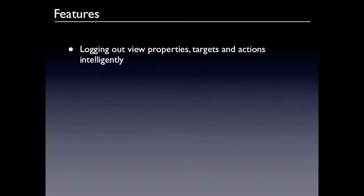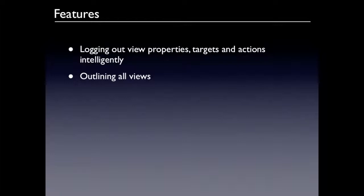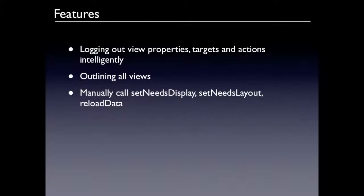It logs out all the properties — it'll look at each property, even ones you've written yourself on a custom UIView, and try to work out what it is and how best to represent it in the log. If it's a color, it'll show RGB. If it's an auto-resizing view, it can actually show you exactly the flexible margins and all that. You can also manually call set needs display, layout, and reload data, which is convenient so you don't have to set up a button somewhere just to reload a table.